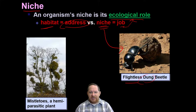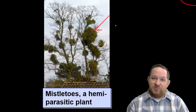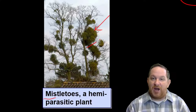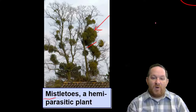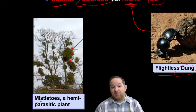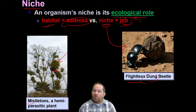Another interesting niche that a lot of people don't think about is actually mistletoe. When it's the holiday season, everybody likes to stand under the mistletoe, but actually mistletoe is a hemiparasitic plant. Its niche, its job, is sort of a parasite — it gets nutrients from a lot of these trees. So while we like to sing songs about mistletoe, it's actually a hemiparasitic plant. These two organisms, the mistletoe and the dung beetle, have jobs or roles in their community — those are called niches.